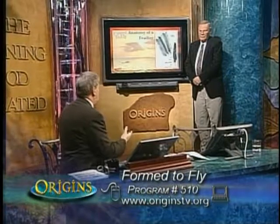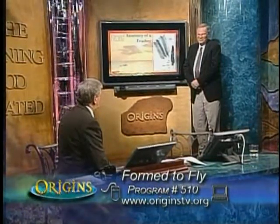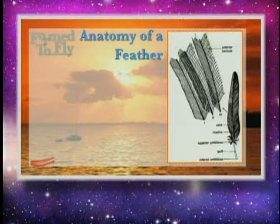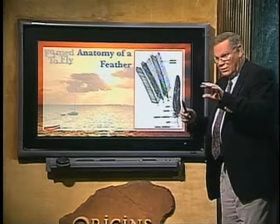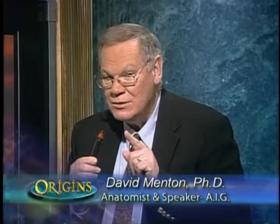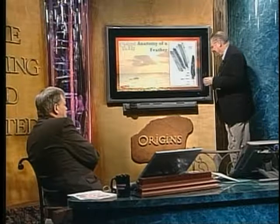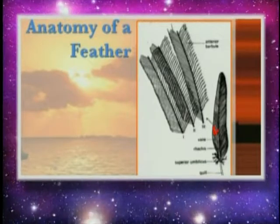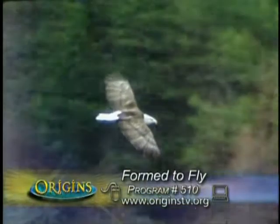We're back with Dr. David Menton, describing 'Form to Fly' — birds and feathers and how they have nothing to do with reptiles and scales. A feather looks so simple, but there's a whole anatomy to it. Birds have a finite number of feathers — you can make a map of all feathers on a bird; it's a left-right perfect match, grown in matched pairs and molted in matched pairs to keep the bird symmetrical at all times. If one falls out, it's replaced immediately, just like a hair.